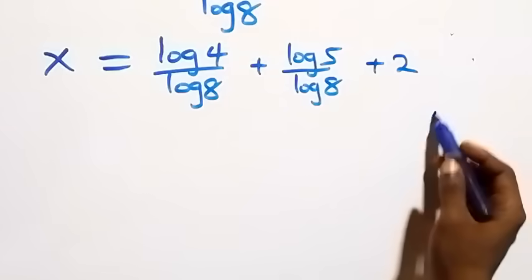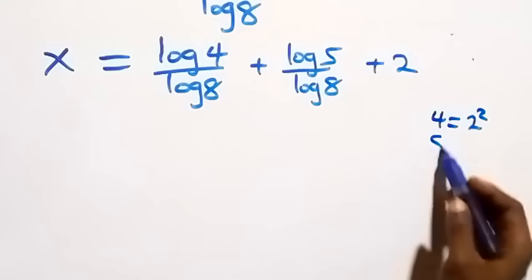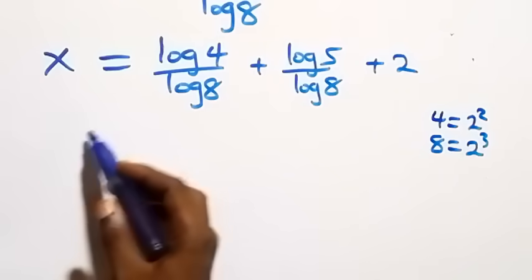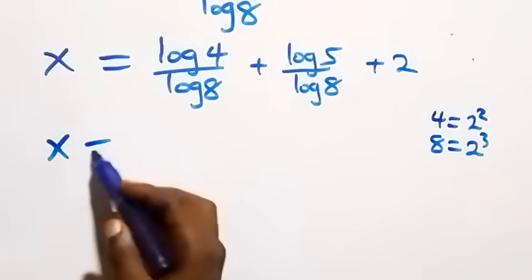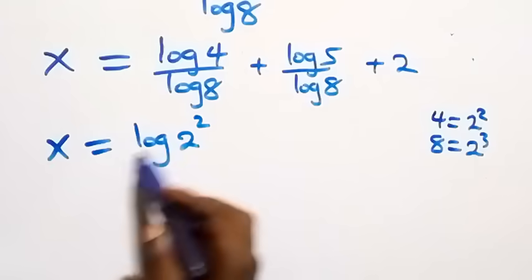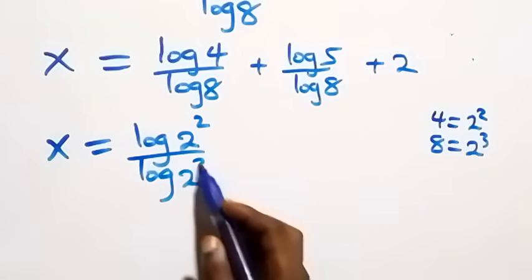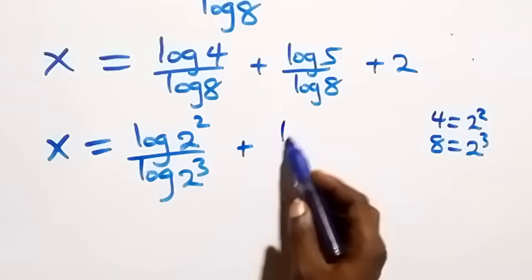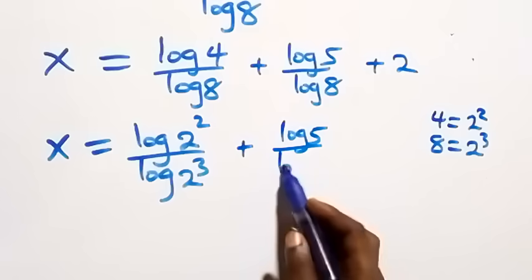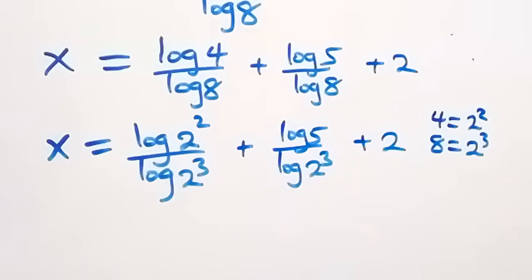We can express 4 as 2 times 2, which is 2 squared, and 8 as 2 times 2 times 2, which is 2 raised to power 3. So what we have becomes x equals log(2 squared) over log(2 raised to power 3), plus log 5 over log(2 raised to power 3), plus 2.